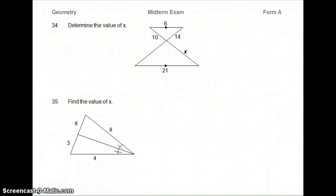34. Determine the value of X. These two triangles here. So we have to see. We've got the sides which are going to match up. Let's see which one of these we're going to use for this. Just to be sure, we've got alternate angles that match up here and alternate angles that match up here. So the 10 must match with the X.